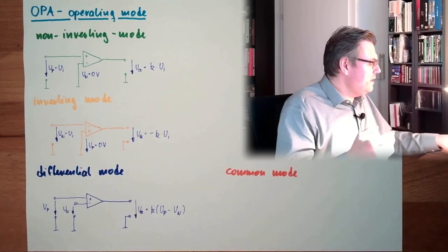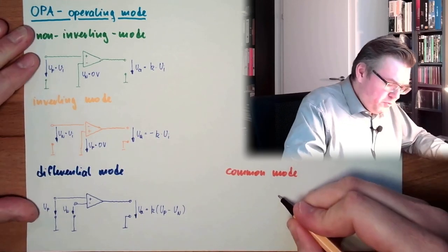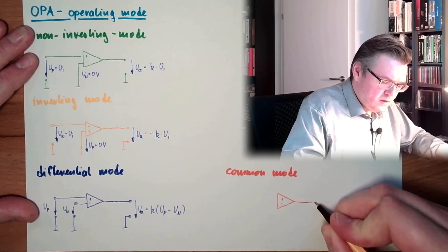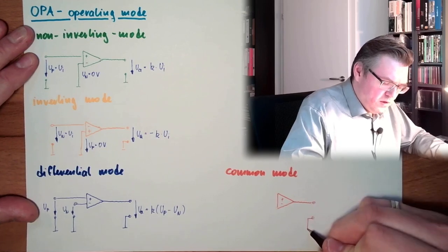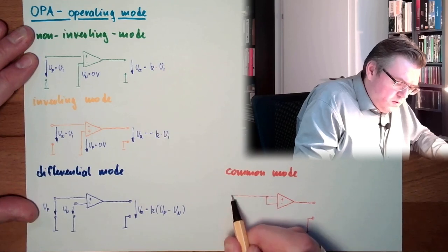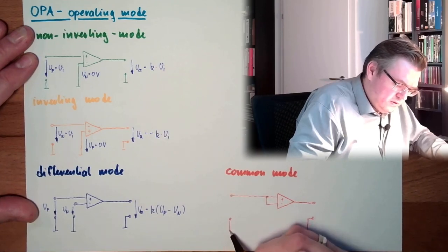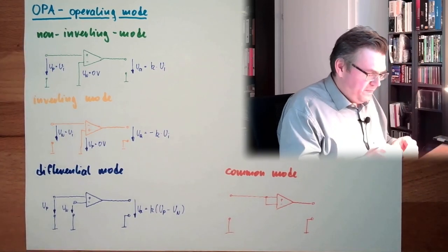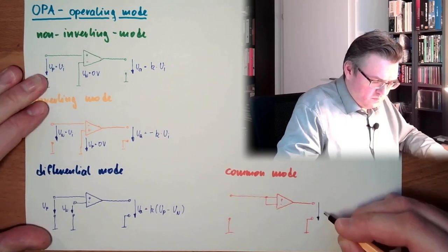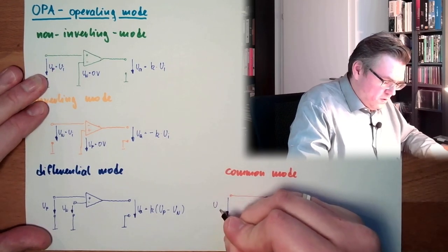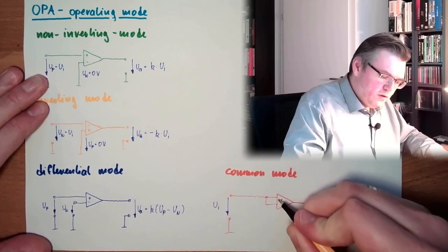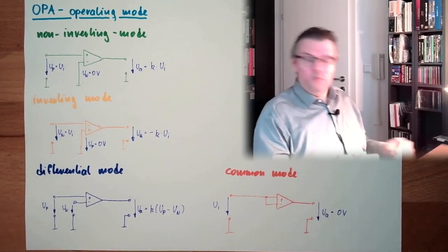What's the common mode? This is when both inputs share the same input voltage. So we have plus and minus. We have a UI. And we have a UA. This is zero volt because we have no difference.